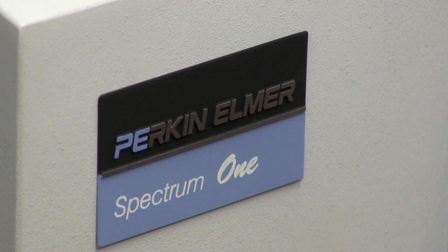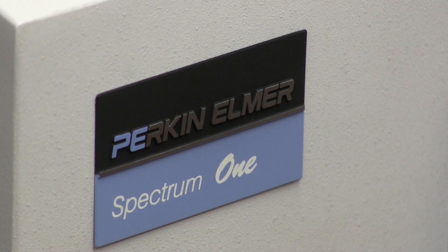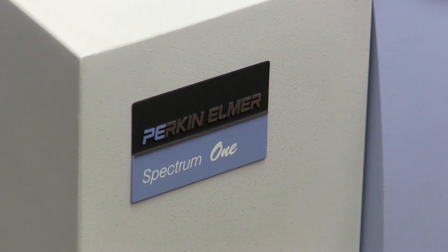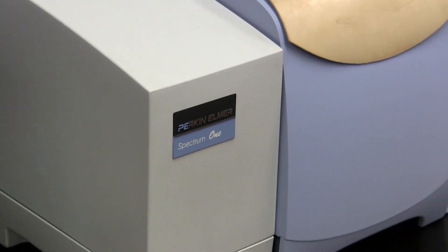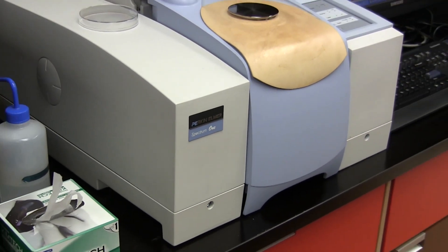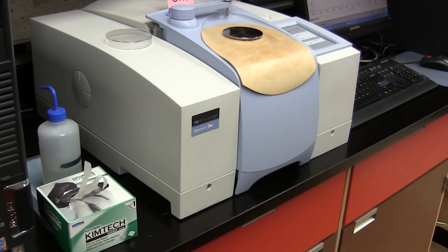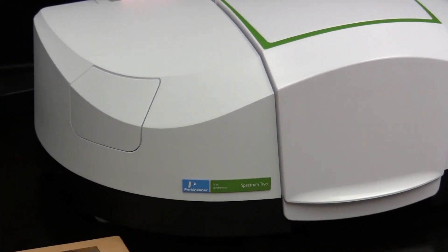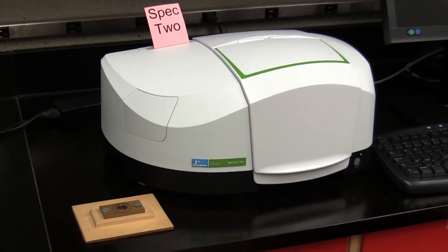The Chemistry Department owns two Fourier transform IR spectrometers, often just called FTIR. The first is a Perkin-Elmer Spectrum 1 FTIR, which we refer to as SPEC 1, and the other is a Perkin-Elmer Spectrum 2 FTIR, which we refer to as SPEC 2.